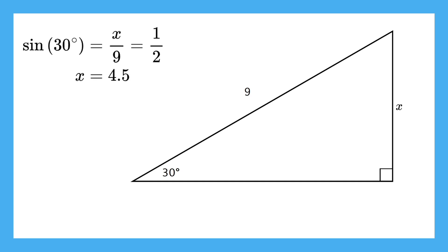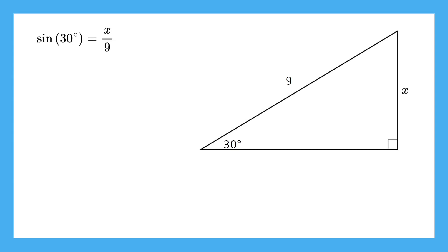It's great to use a pattern like this, and it can be very helpful, but what if the numbers aren't so nice or we don't have another triangle to compare it to? Then let's learn how to solve for x on our calculators. Let's look at the same equation and pretend we don't already know the answer is 4.5. We can multiply both sides of this equation by 9. Now that x has been isolated, we can type 9 times the sine of 30 into our calculator.